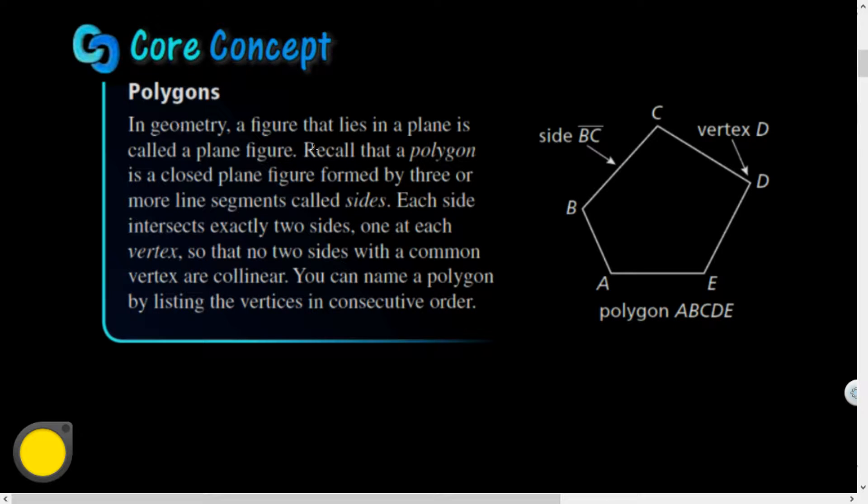First, we're going to cover a little bit of vocabulary. In geometry, a figure that lies in a plane, so a two-dimensional figure, is called a plane figure. Recall that a polygon is a closed plane figure formed by three or more line segments called sides. Each side intersects exactly two sides. For instance, segment BC has common endpoints with two of the other sides.